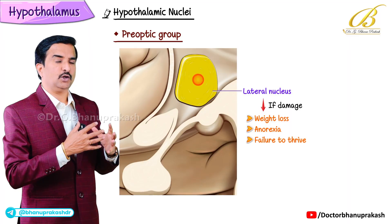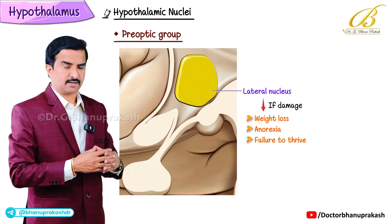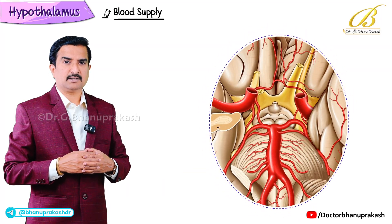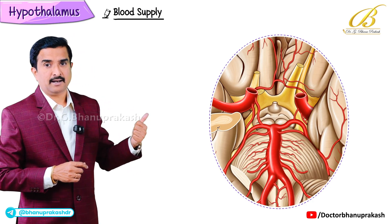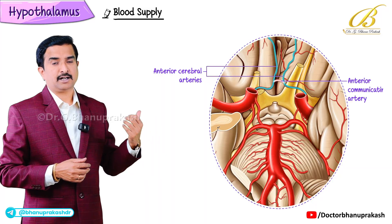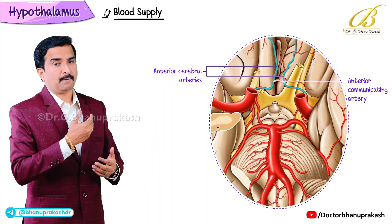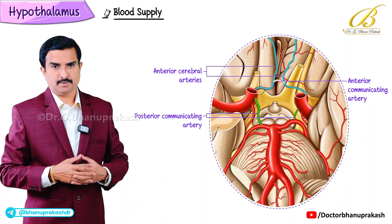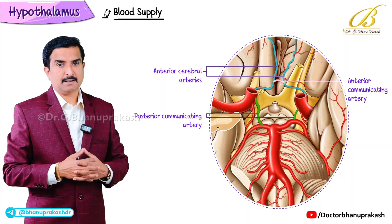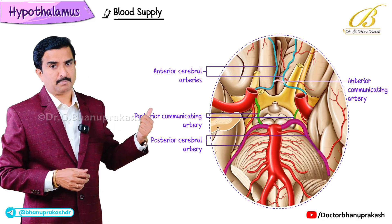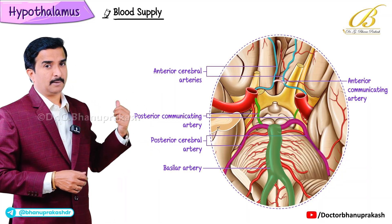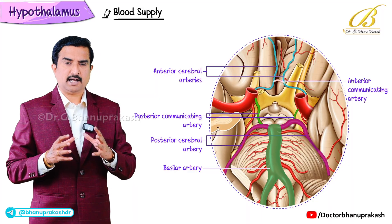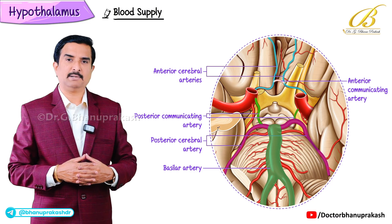These are all the nuclei of the hypothalamus and their important functions. Regarding blood supply: the anterior hypothalamus is supplied by the anterior cerebral and anterior communicating arteries; the tuberal part is supplied by the posterior communicating artery; and the posterior hypothalamus is supplied by the posterior cerebral artery and the basilar artery. With this, we have completed the important points about the hypothalamic nuclei as well as its blood supply.